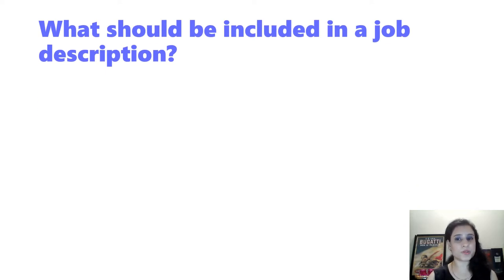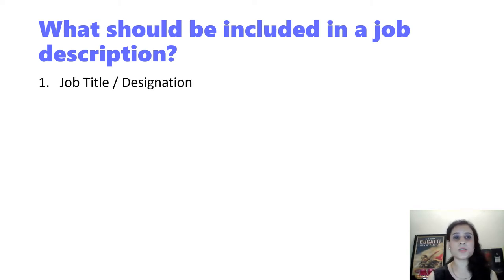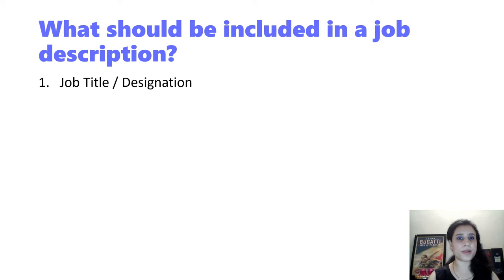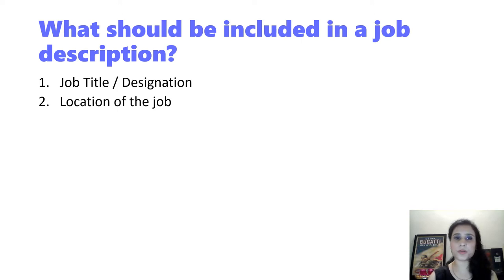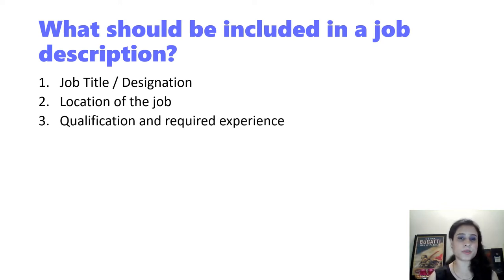What should be included in a job description? These are some basic things that are a must. The first one is the job title or the designation. If you have very funky designations in your organization, it's best to write whatever is the industry equivalent of that designation — only then will you be able to hire the right candidate. Location of the job is very important because not all candidates will be willing to relocate, or they might be looking for specific locations, so it should be mentioned in the job description.